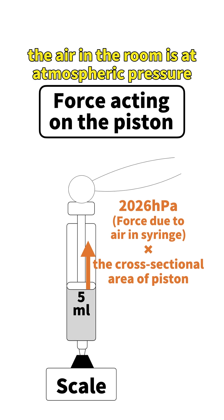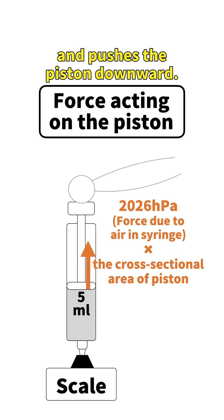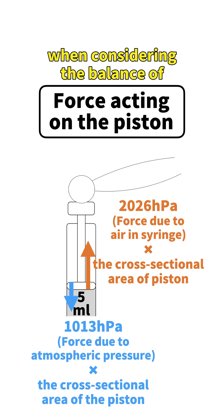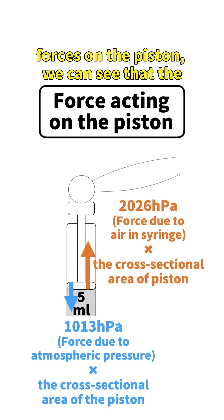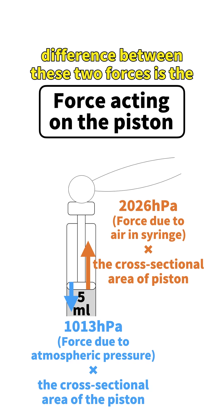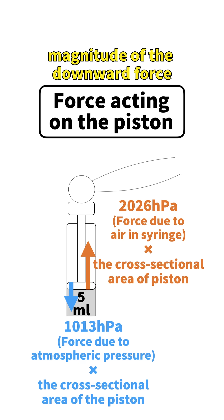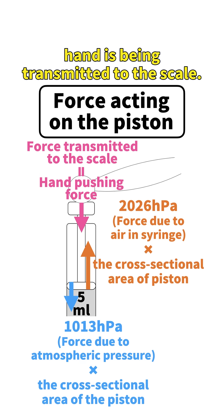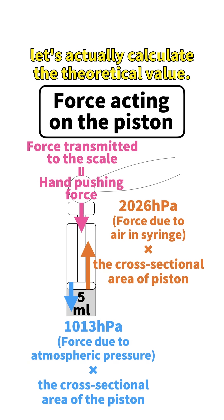Meanwhile, the air in the room is at atmospheric pressure and pushes the piston downward. Therefore, when considering the balance of forces on the piston, we can see that the difference between these two forces is the magnitude of the downward force applied by the hand to the piston. And it is thought that the force from the hand is being transmitted to the scale.